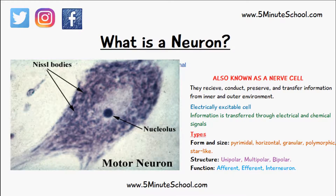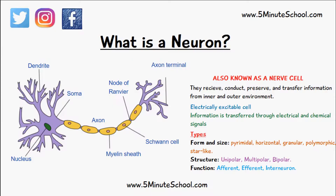The function of Nissl bodies is to make proteins, and they're also useful in staining neurons. Neurons also contain ribosomes and the other organelles typical of an animal cell.